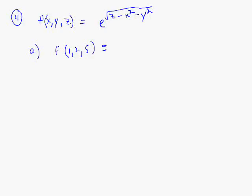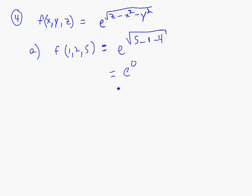Okay, this is number 4 on 14.1. In part A, we're asked to evaluate f(x, y, z) at (1, 2, 5). So it's function notation just with three different inputs here. So that becomes e to the square root of 5 minus 1 squared minus 2 squared. So that becomes e to the 0, or 1. So that's part A.